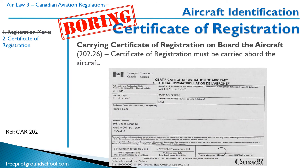Every aircraft in Canada must carry on board a certificate of registration. This is issued by Transport Canada and identifies the registered owner of the aircraft. What it doesn't identify is who has title to the aircraft, because somebody might own an aircraft and lease it to somebody else, and the person leasing it would be registered as the owner even though they don't own it.